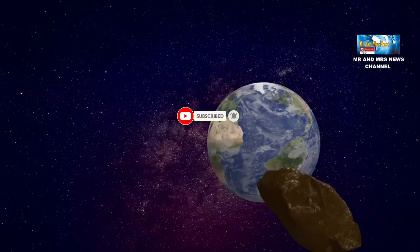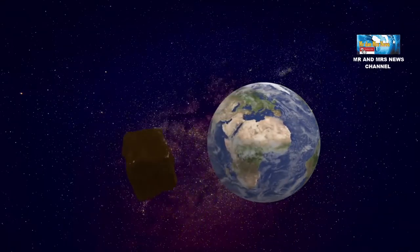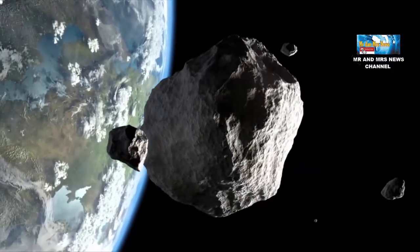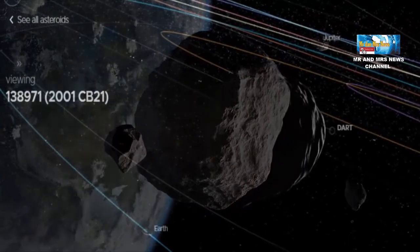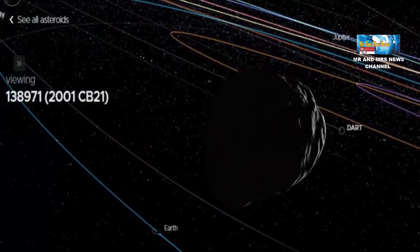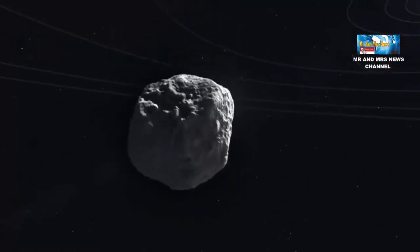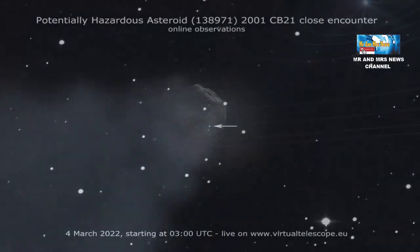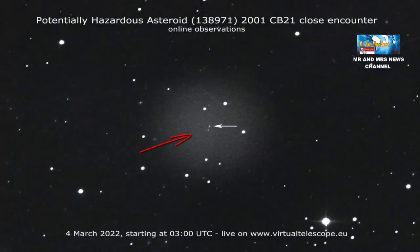Images of this space asteroid were successfully captured through Earth's space telescope by astronomer Gianluca Masi from Italy's Virtual Telescope Project on January 30, 2022. At that time, the asteroid's distance from Earth was still more than 21.75 million miles. The asteroid's appearance was still just a small white dot.